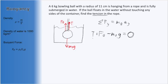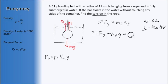Looking at this equation, we know we're trying to find tension, so we need to plug in numbers for everything else. We know the mass of the bowling ball is 6 kg, and G is always 9.8, but we currently don't have the buoyant force. This is where we use our new equation: the buoyant force equals the density of the liquid times the volume displaced times G. We know the fluid is water, so the density is 1000 kg per meter cubed. Since the entire volume of the ball has been submerged, the volume of the displaced liquid must be the entire volume of the bowling ball.